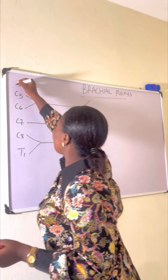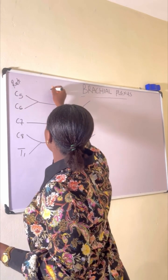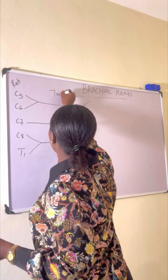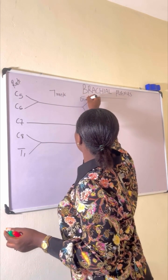Now, let's call those the rules of the brachial plexus. These are the trunks and the divisions.